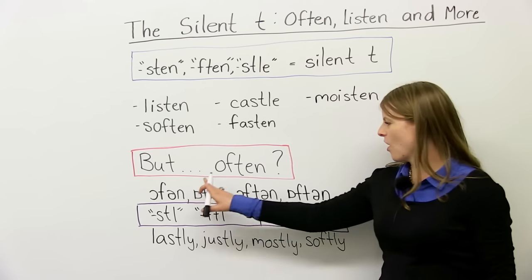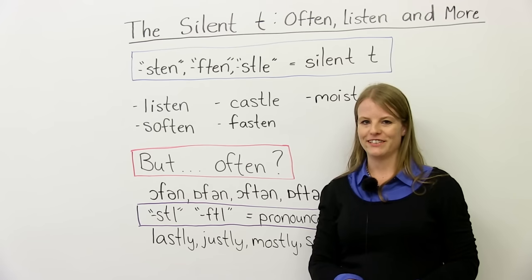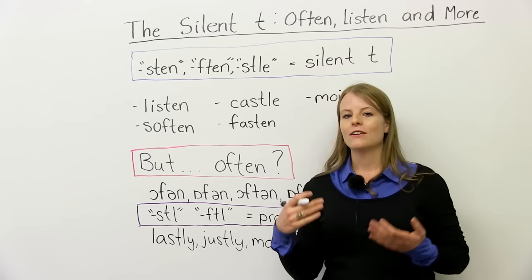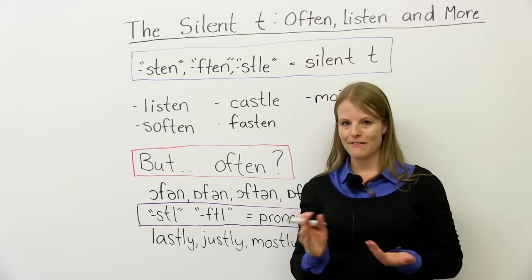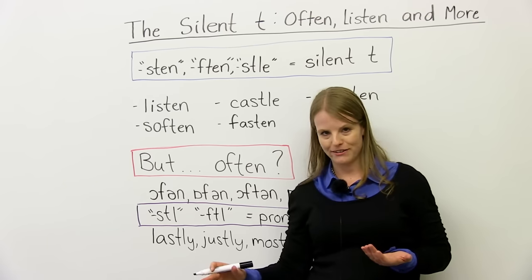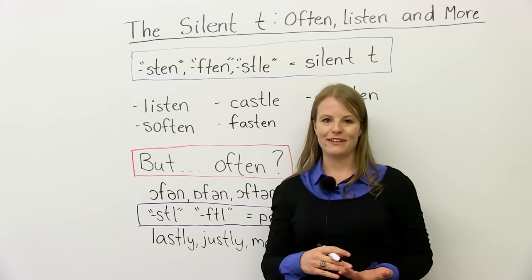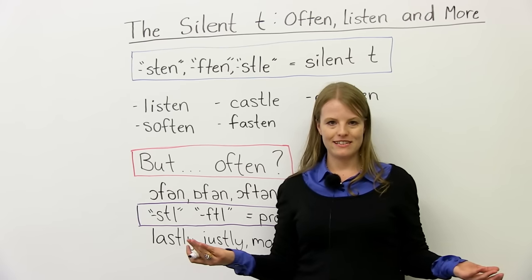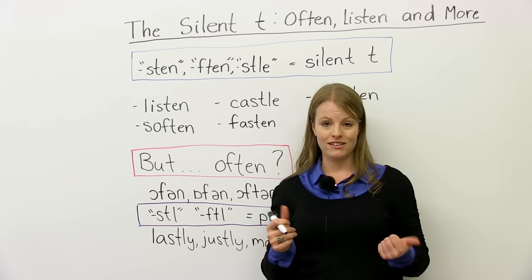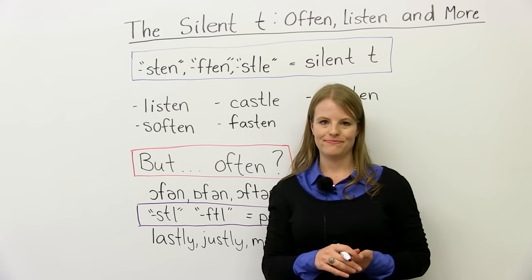But what about often? Did you hear how I said that? Did I say it with a T or without a T? Often. So often is when it gets a little complicated because of the history of this word. Originally, in the 1700s, often was pronounced with a T. And then they stopped pronouncing it with a T. They pronounced it often. And then people started to pronounce it with T again. So nowadays, how do we pronounce it? Both ways.